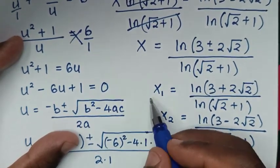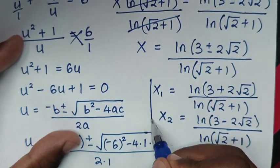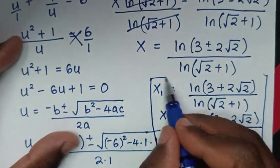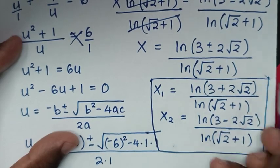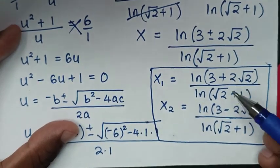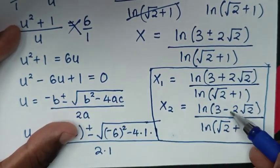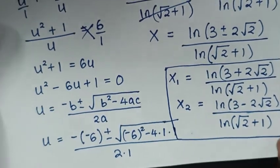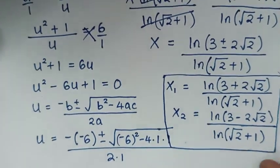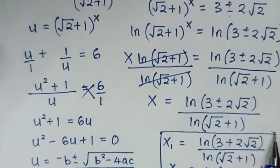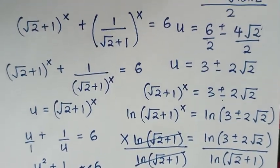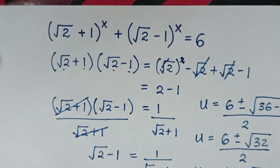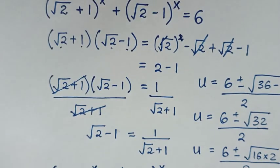These are our two solutions — two values of x. The numerators differ only in sign, while the denominators are the same. Thank you for watching; don't forget to subscribe to my channel, and see you in the next video!